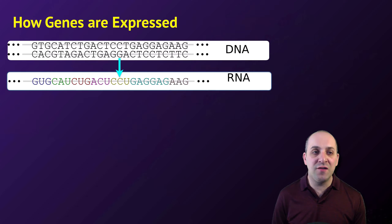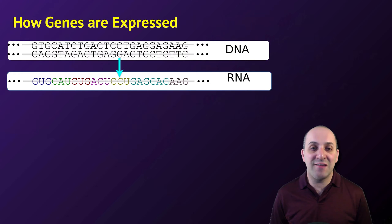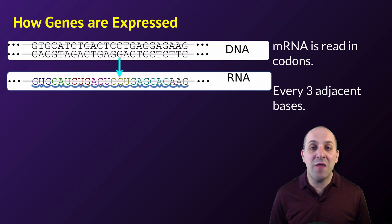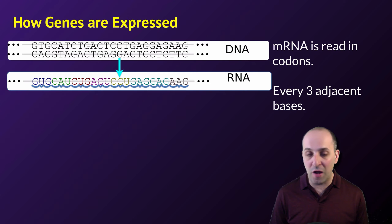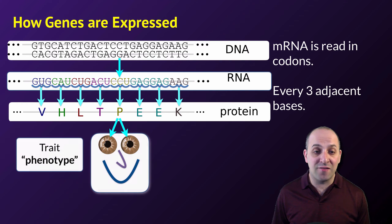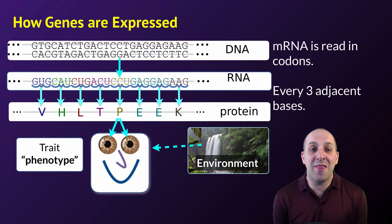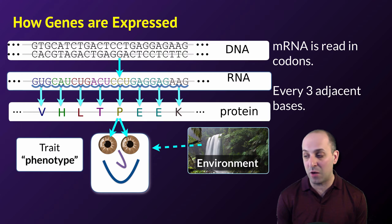Let's zoom out and look at how genes are expressed. The sequence information in DNA is first copied into RNA. Messenger RNA molecules are going to take that sequence information to the ribosome where it will be interpreted. It turns out that messenger RNAs are read in segments of three nucleotides, or what are referred to as codons. Each codon is going to code for a specific amino acid in the protein, and it's through the action of proteins that we get traits, with a nod to the environment of course. This is the way that genetic information works to go from DNA through to the point of having traits in organisms.